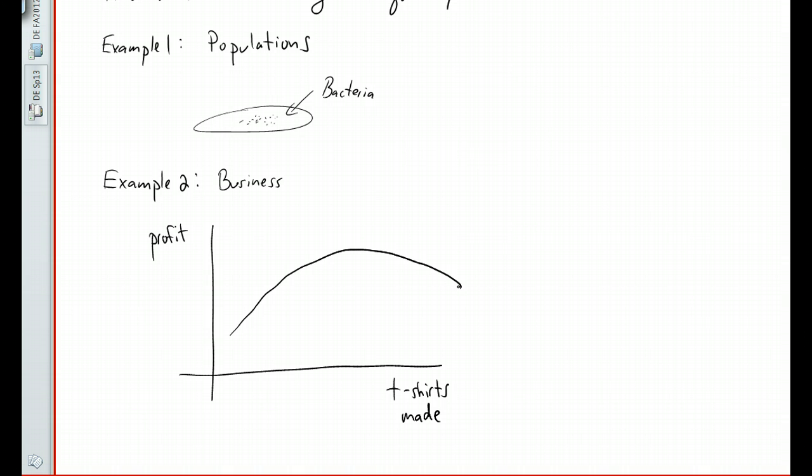Not only can derivatives and calculus give you this model, but they can also analyze it for you. You'll notice from this simple graph that your profits change for the better until you get to this point right here. As soon as you make any more t-shirts than this number, your profits actually change for the worse. That means your derivative goes from positive to negative, and calculus can tell you where that point happens.